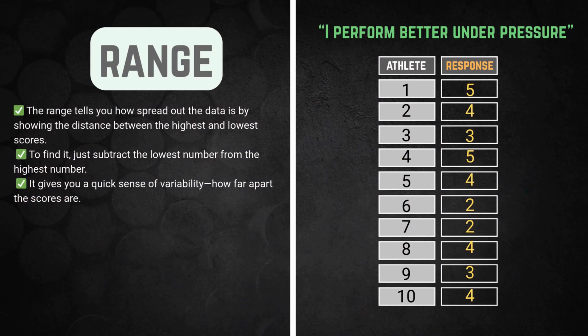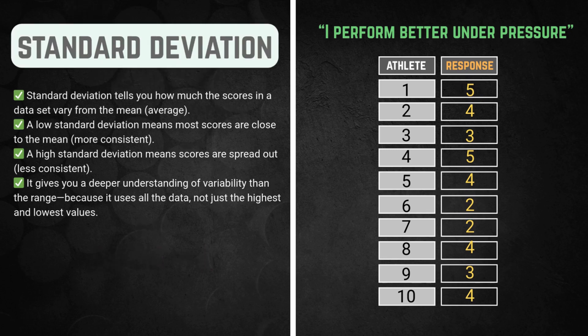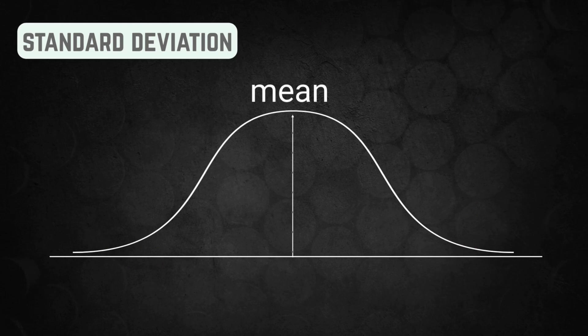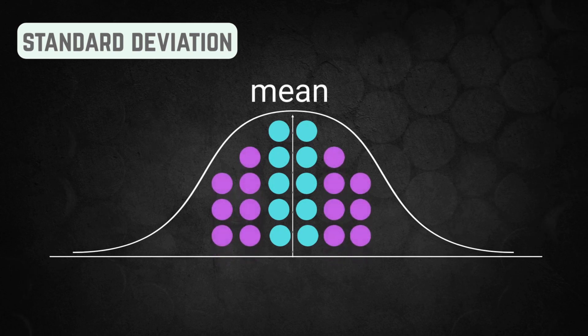First up, the range. And that one's easy. Just take the highest score and subtract it by the lowest score. From our previous dataset, highest is 5, lowest is 2, 5 minus 2, the range is 3. Next up is standard deviation, and this one's super useful. Standard deviation tells us how spread out the scores are around the mean. In other words, how much variety is hiding behind the nice looking average.